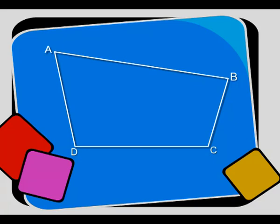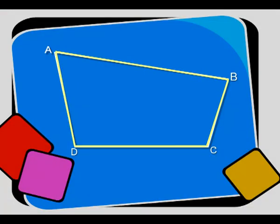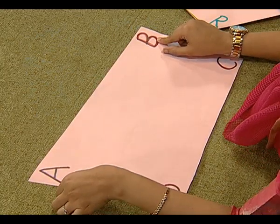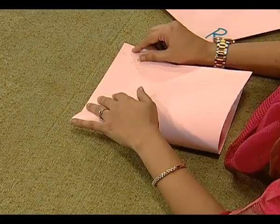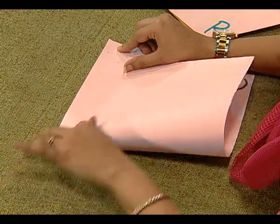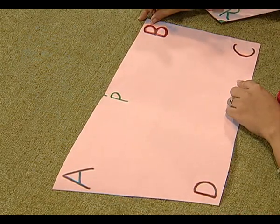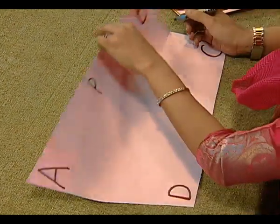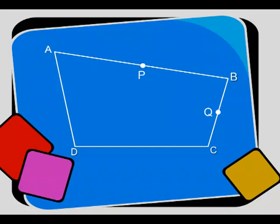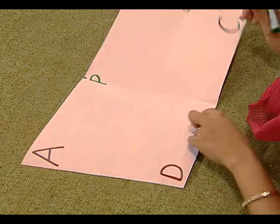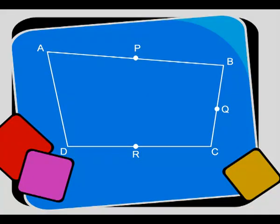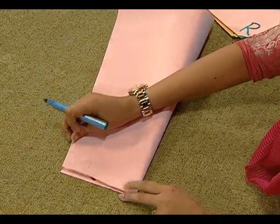So let's start this activity. First, take any quadrilateral A, B, C, D. We will first find the midpoints of the sides AB, BC, CD, and DA. To find the midpoint of side AB, we will fold AB in such a way that point A coincides with point B, then unfold and mark the midpoint of AB as P. Similarly, we will find the midpoint of side BC and name it Q, then CD and name it R, and then DA and name it S.